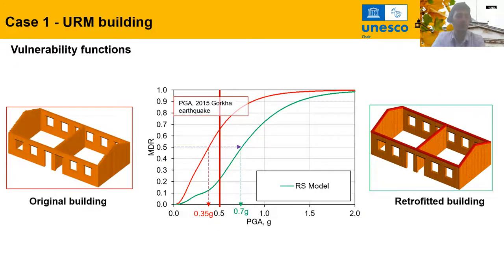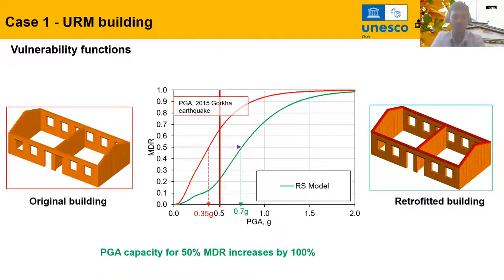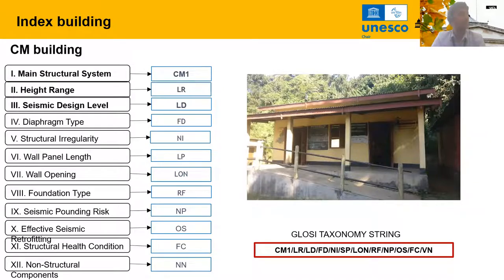Similarly, we derived the vulnerability functions. The red curve is the original building and the green is the retrofit. At 50 percent mean damage ratio, the capacity of the original building is 0.35g while the retrofit building exceeds 0.7g — a 100 percent increment in PGA capacity for a 50 percent loss ratio. This is a very good improvement because we used the most efficient retrofit solution: binding all wall elements together to achieve global box-like behavior. I will now pass to Asana for the Confined Masonry case.